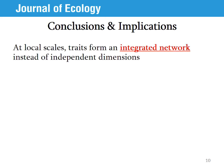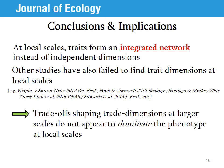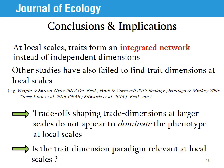In conclusion, we set out to test whether trait dimensions are independent. In fact, we find that two of the three trait dimensions are not even detectable at this local scale — our traits form an integrated network instead of independent dimensions. A number of other studies have also failed to find trait dimensions at local scales, meaning the trade-offs that shape trait dimensions at large scales are probably not dominating the phenotype at local scales. Together, these findings question whether the trait dimension paradigm is relevant at local scales, which is important because many significant ecological processes occur locally.